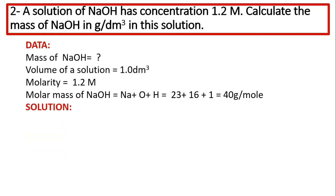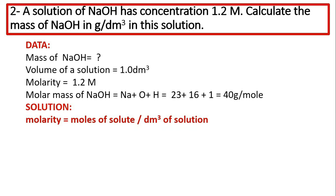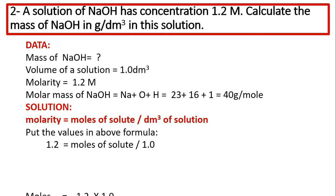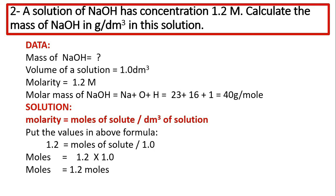Solution: molarity equals moles of solute divided by dm³ of solution. Putting in values: 1.2 equals moles of solute divided by 1.0. We have only molarity and dm³ of solution. So from this, we get number of moles = 1.2 moles.